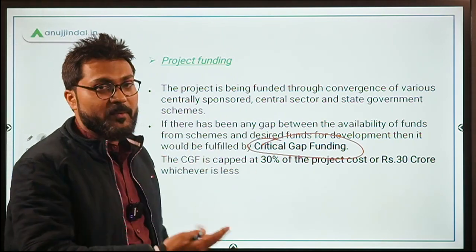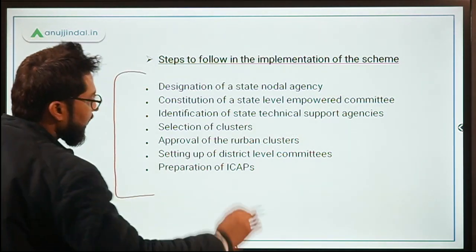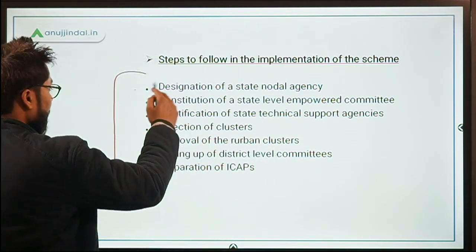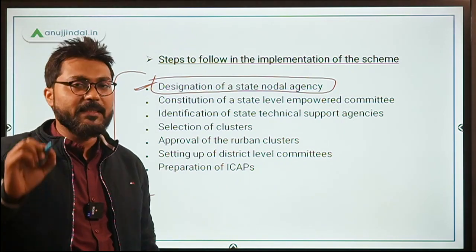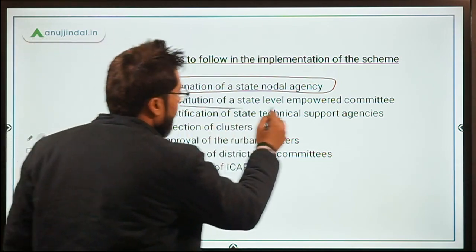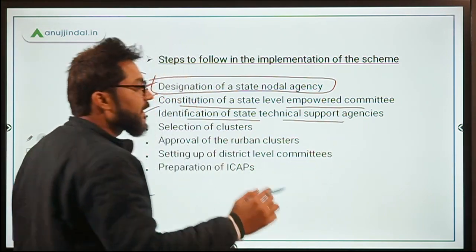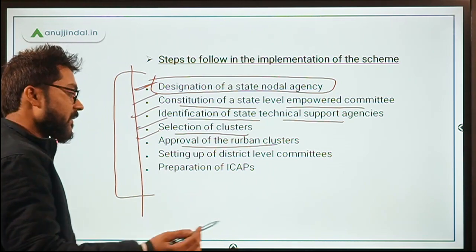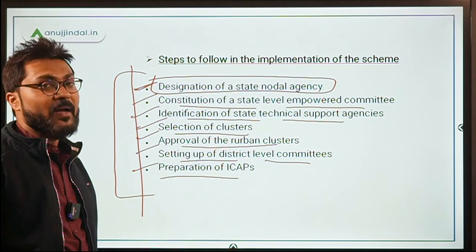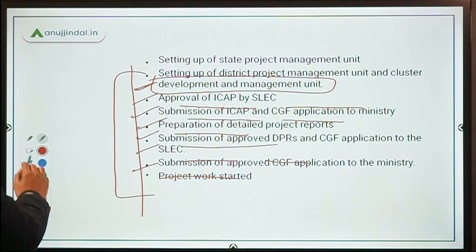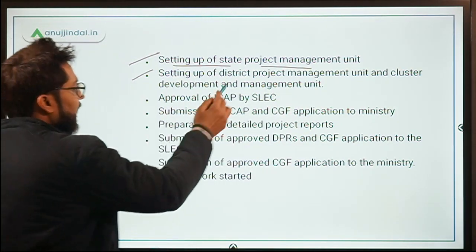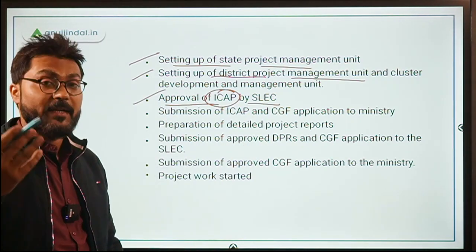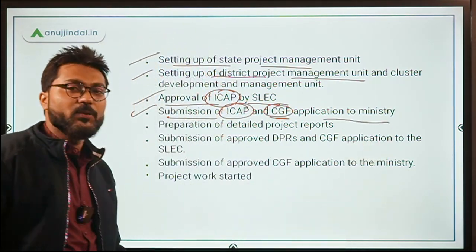The steps followed in implementing the scheme are: designation of a state nodal agency, constitution of a state level empowered committee, identification of state technical support agencies, selection of clusters, approval of rurban clusters, setting up of district level committee, preparation of ICAPs by the respective state, setting up of state project management unit, district project management unit, and cluster project management unit. Then comes approval of ICAP by the State Level Empowered Committee (SLEC), followed by submission of ICAP and critical gap funding application to the Ministry of Rural Development.